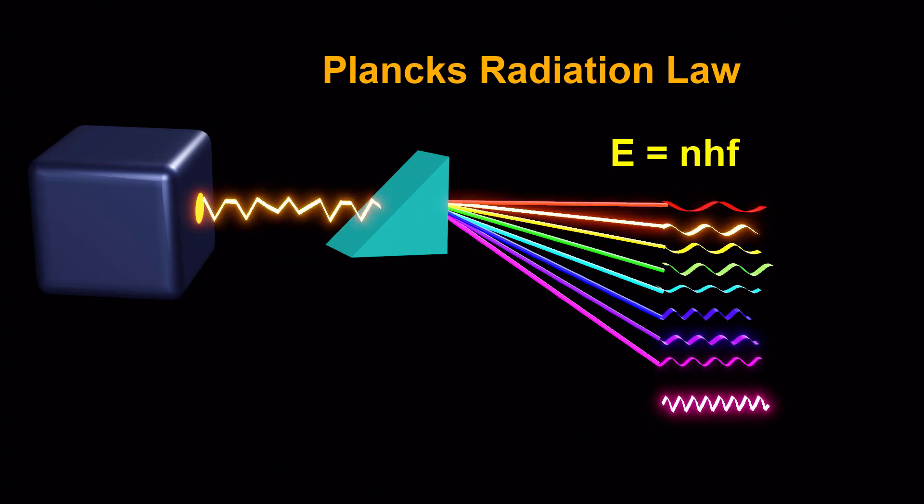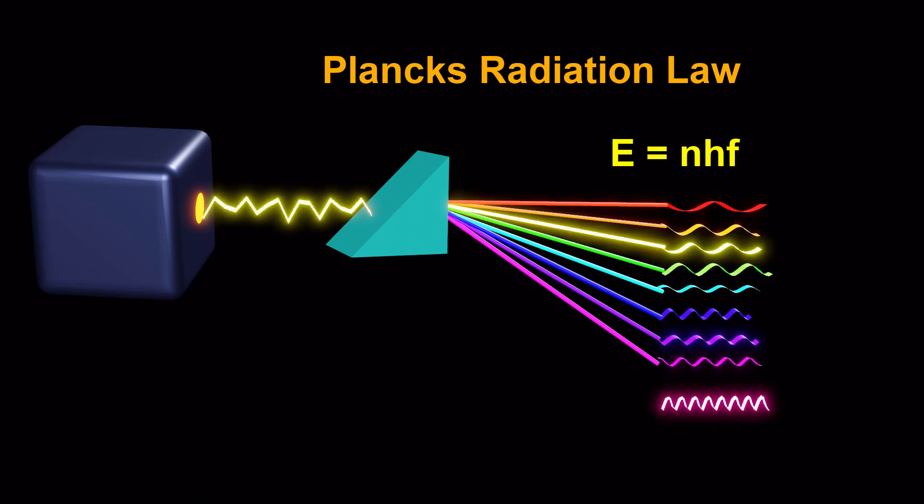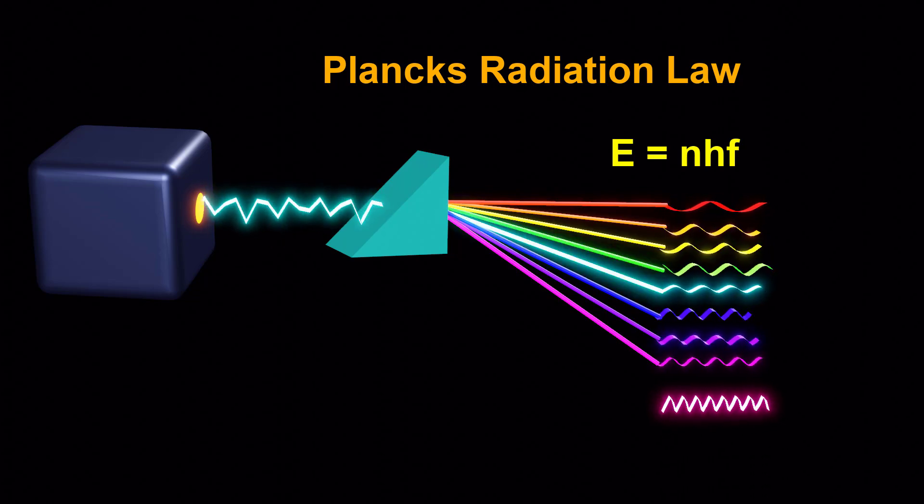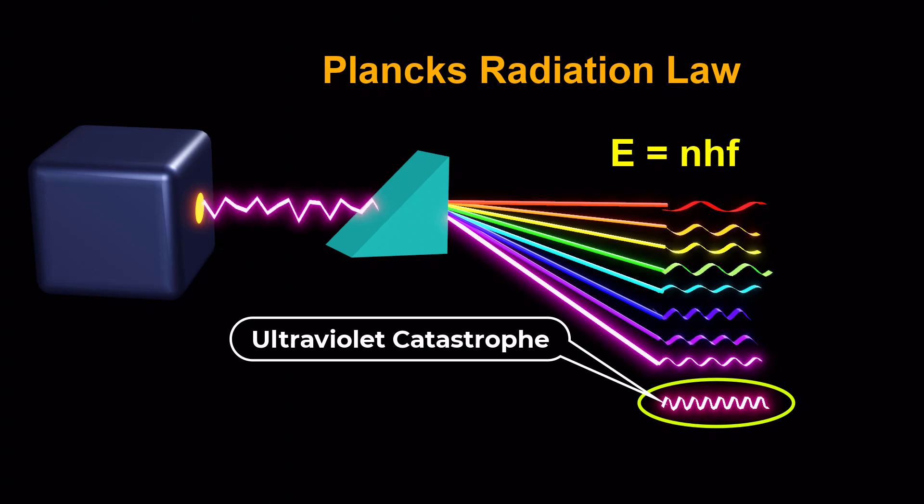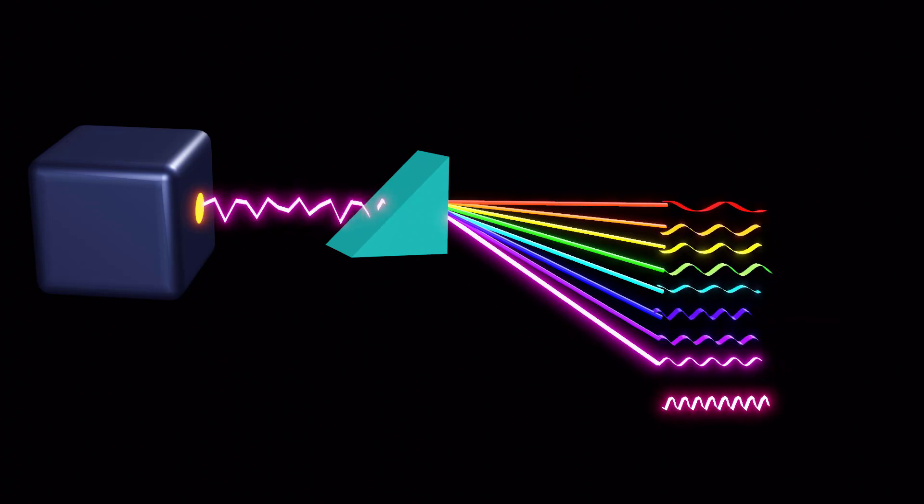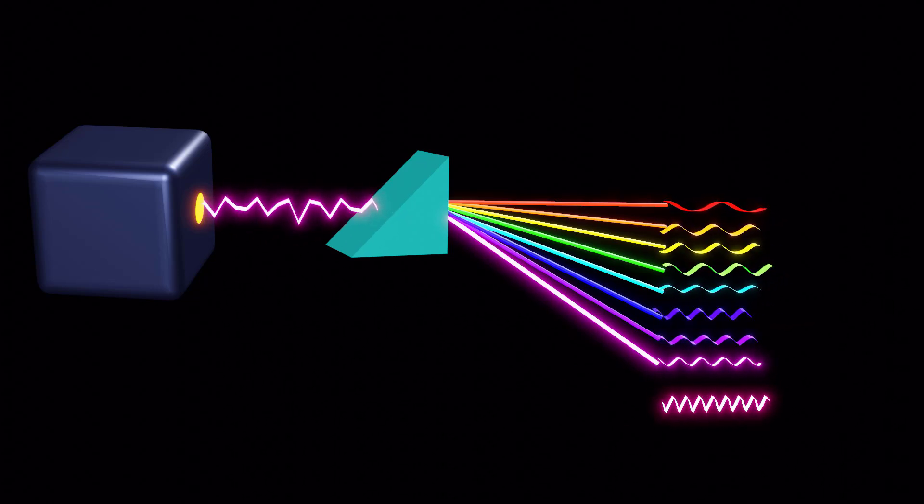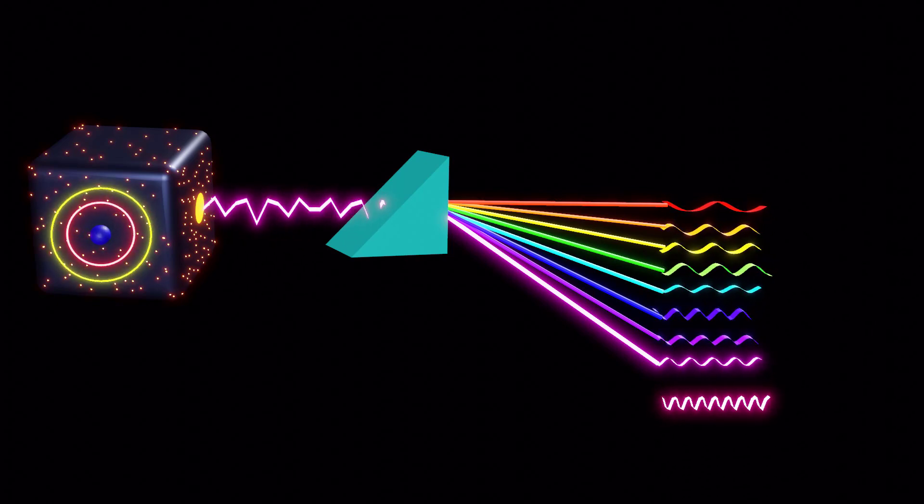Planck's radiation law precisely described the intensity of radiation across all wavelengths and temperatures, effectively resolving the ultraviolet catastrophe. It marked the first step towards a quantum understanding of the atomic and subatomic world.